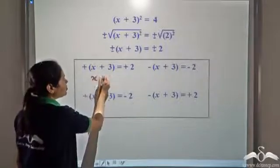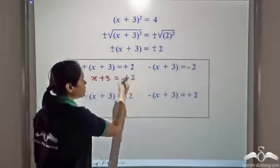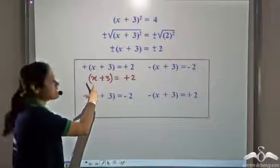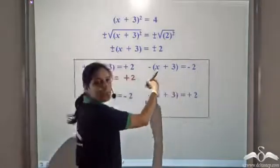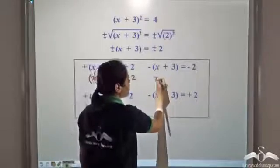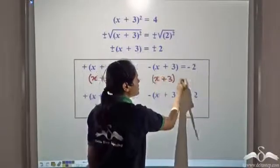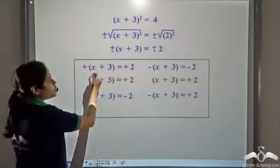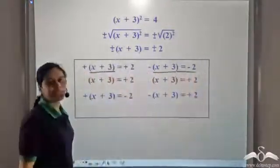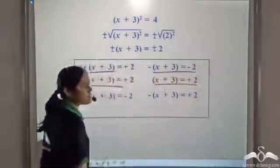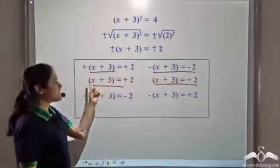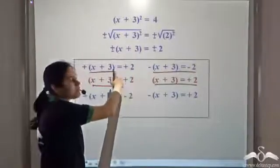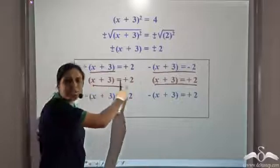From the first combination, x + 3 = +2. If we multiply both sides of the second combination by −1, we also get x + 3 = +2. So both these possibilities give us the same equation: x + 3 = 2.